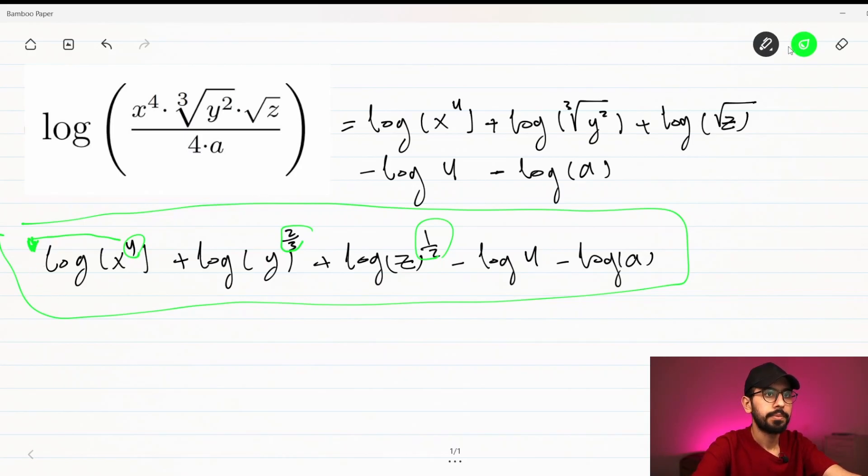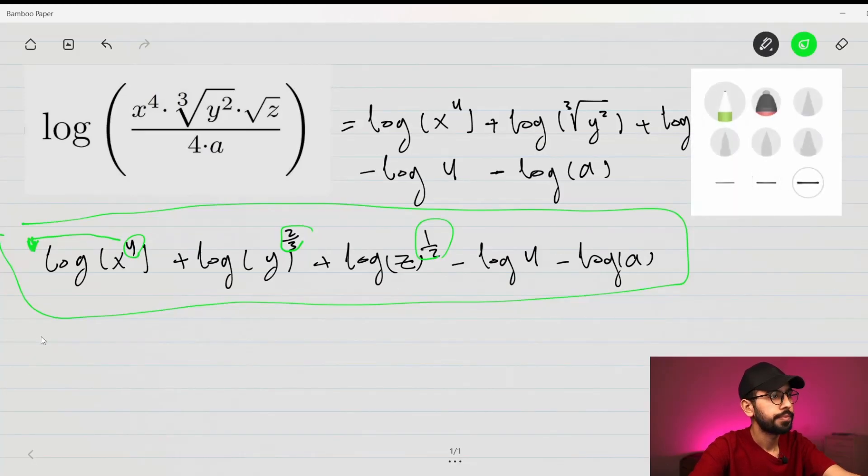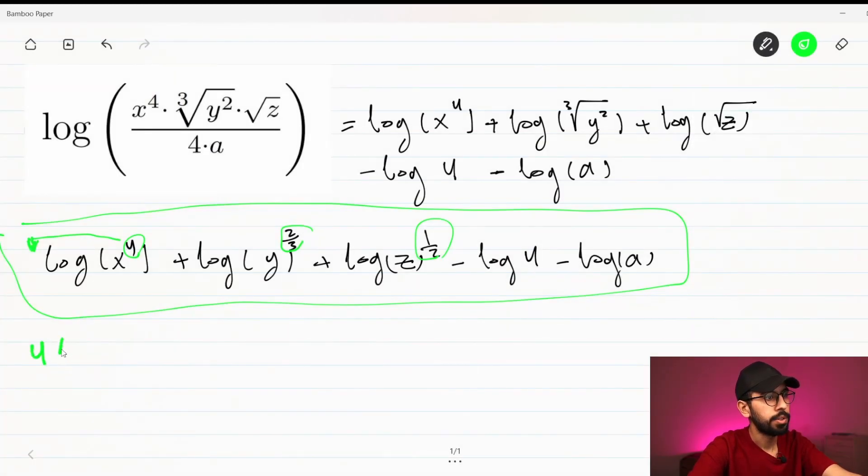So the final result will be 4 log x plus 2/3 log y plus 1/2 log z.